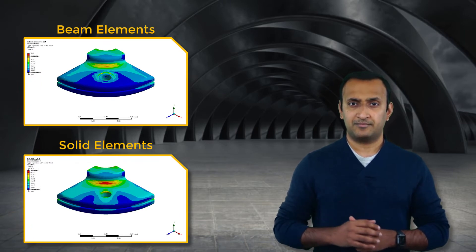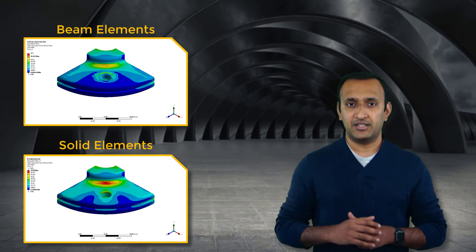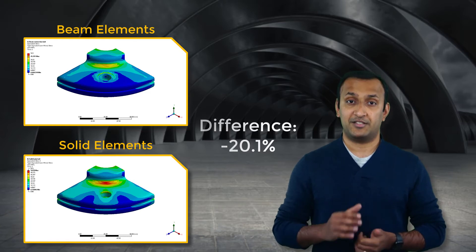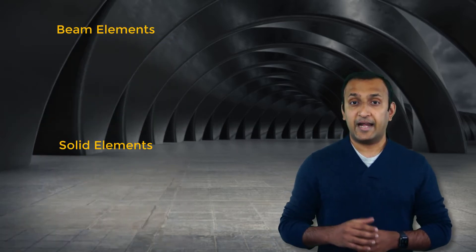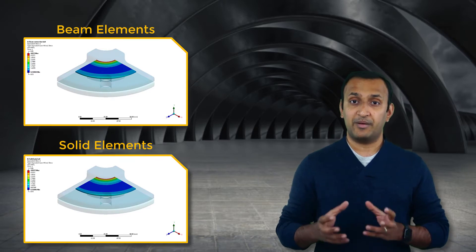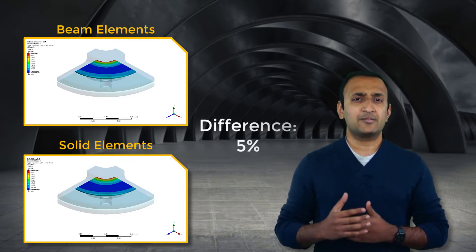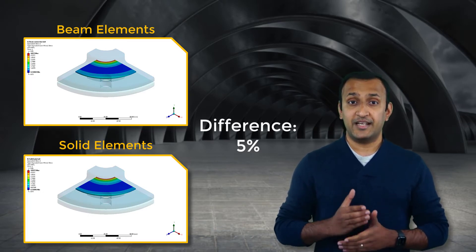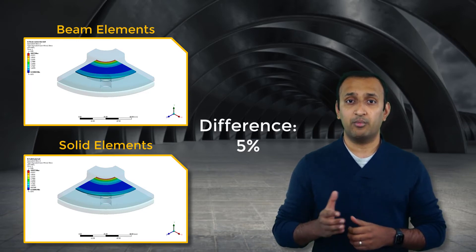Now, let's look at the stresses in the mating parts and the seal from both cases. Starting with the full assembly, here are the equivalent stresses reported by both models. We see that using beam connections underpredicts the average stresses in the assembly by almost 20 percent compared to solid elements. The difference in stresses in the seal is not as prominent as in the whole assembly. This shows that the level of accuracy is affected in the parts in closer proximity to the bolts and not the full assembly. So, if the user is interested in studying the stresses in the bolt or the parts which they are connected to, then using solid elements is the recommended method.